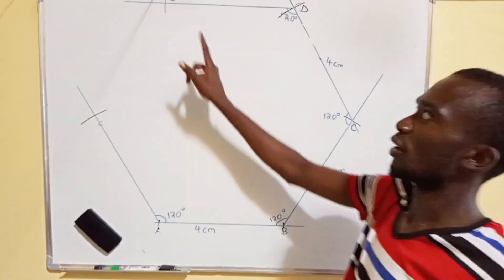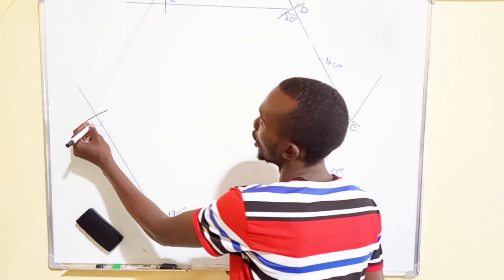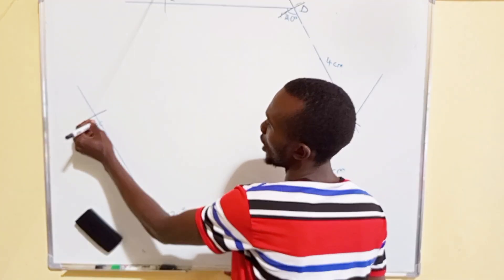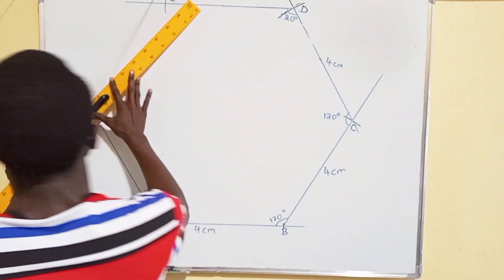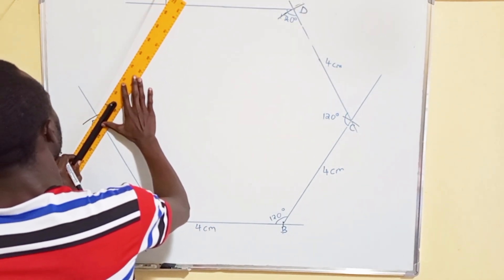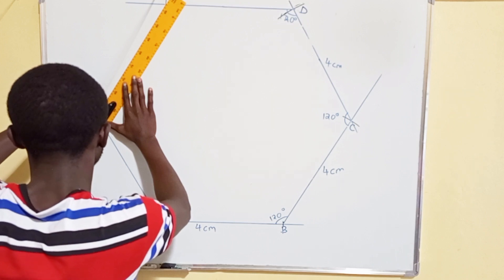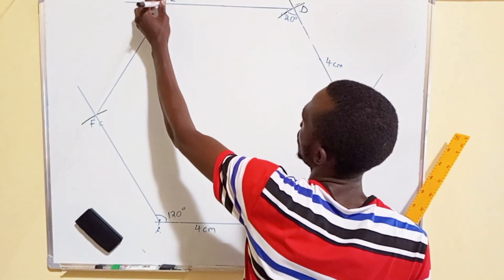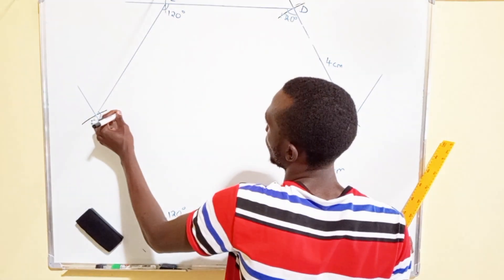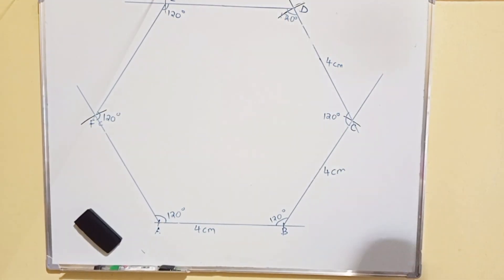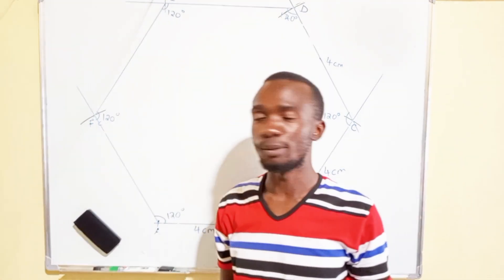There's no need to measure the angle at point E, because now we simply join point E to point F. The angle at E is automatically correct as it is one of the last vertices of the regular hexagon. So this angle here is 120 degrees, and this one is also 120 degrees. That's how we construct a regular hexagon. Please subscribe to my channel and click the notification bell for more videos. Thank you.